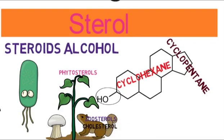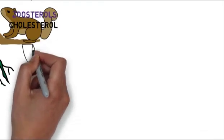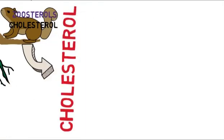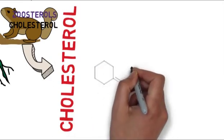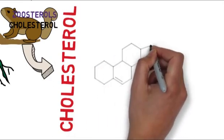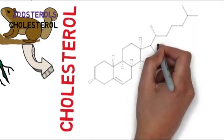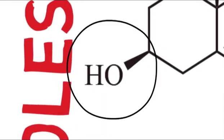The most important sterol in animals is cholesterol. Cholesterol is the most abundant steroid in the human body. Cholesterol is a 27-carbon compound with a hydroxyl group on carbon number three. It is a waxy solid.